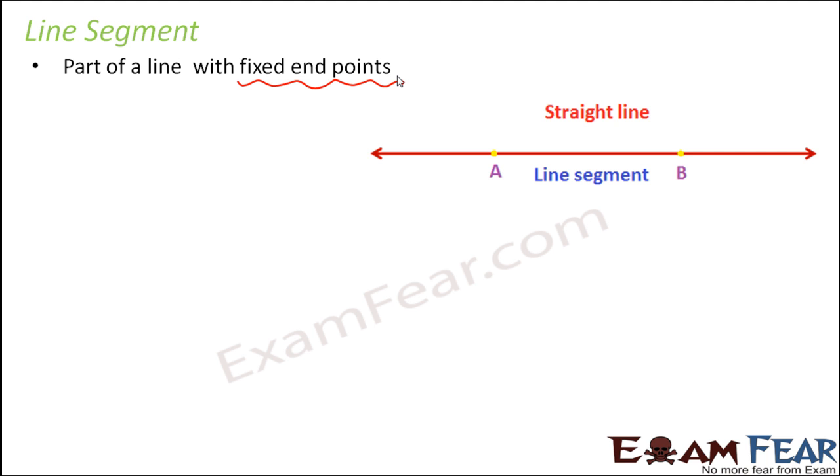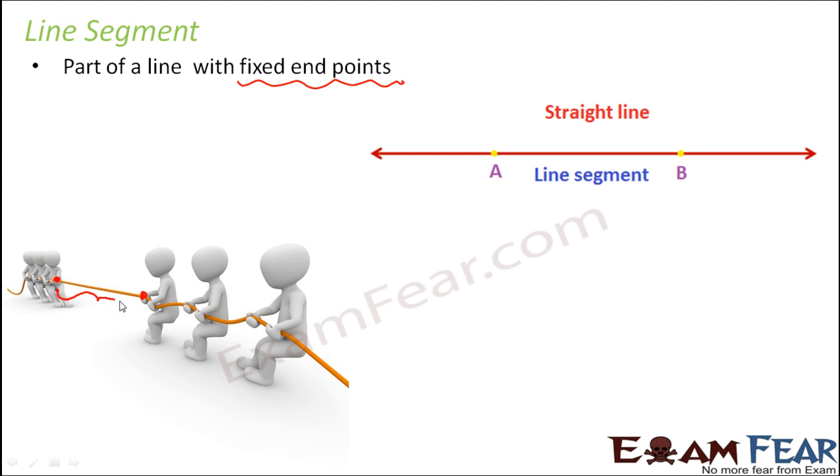Let's think of this game - I'm sure you would have played with your friends. You have two teams and both teams try to pull the rope in their own direction. When you look at this long rope, when you look at a portion of this rope from this part to this part, this portion is nothing but a line segment because it is part of that big rope.